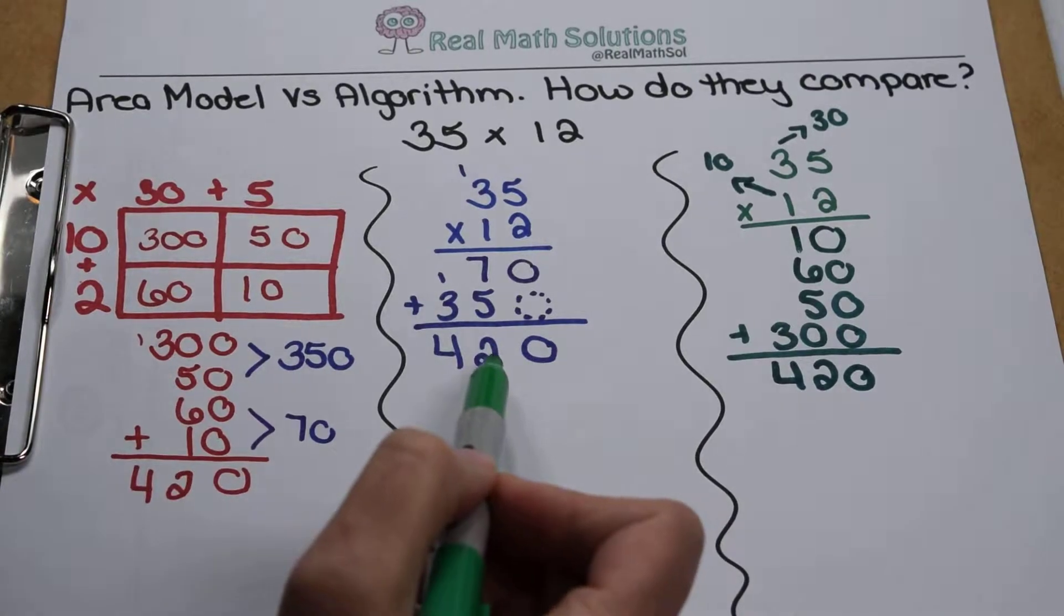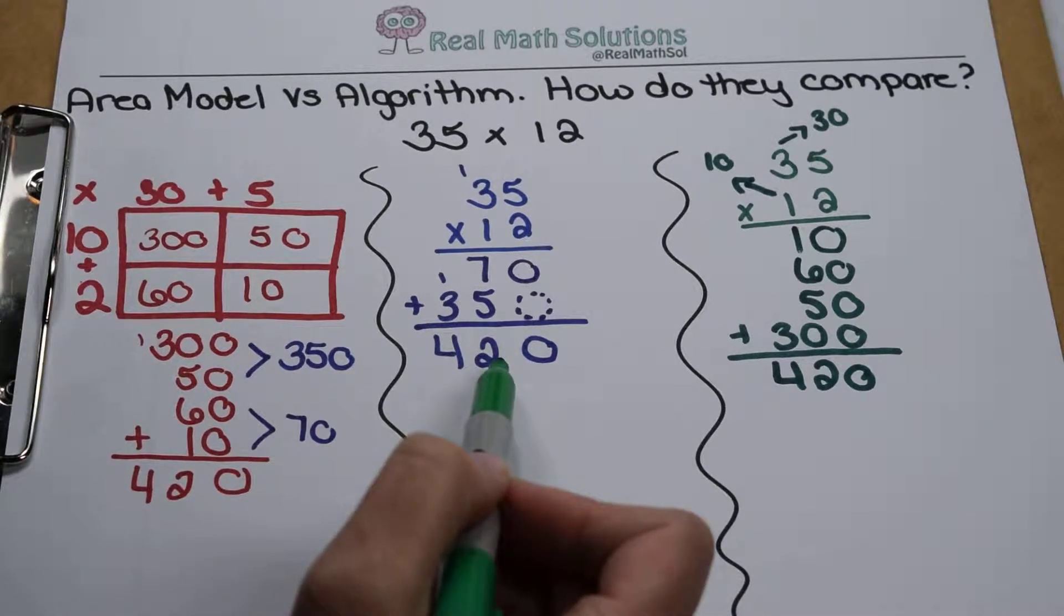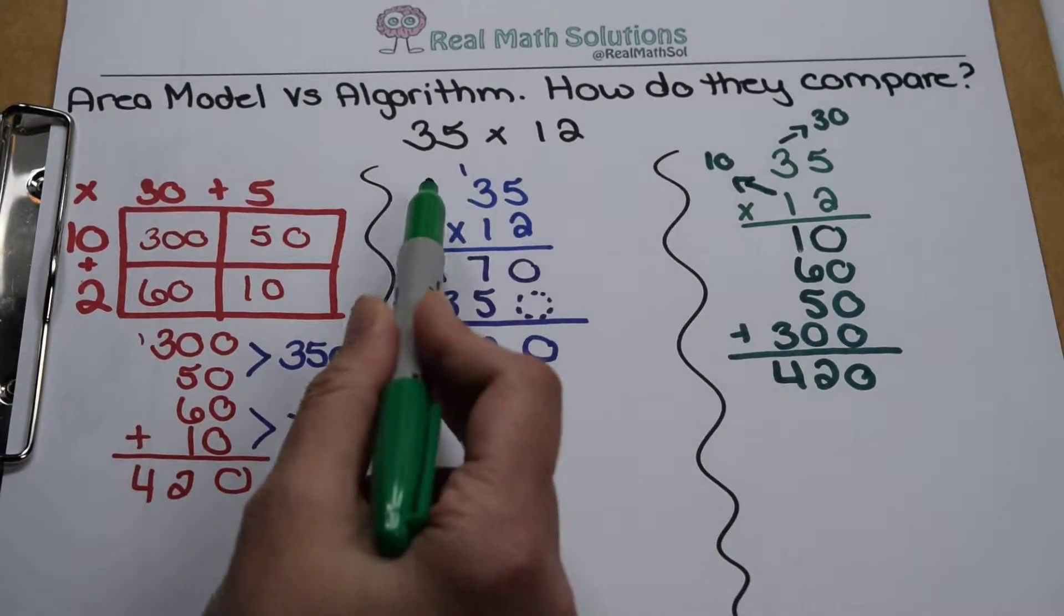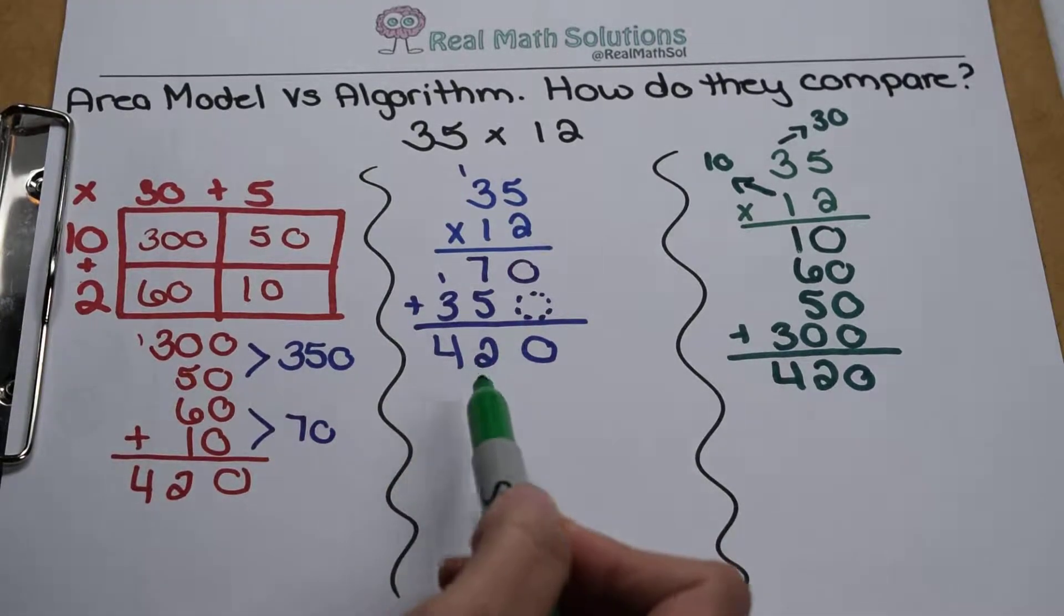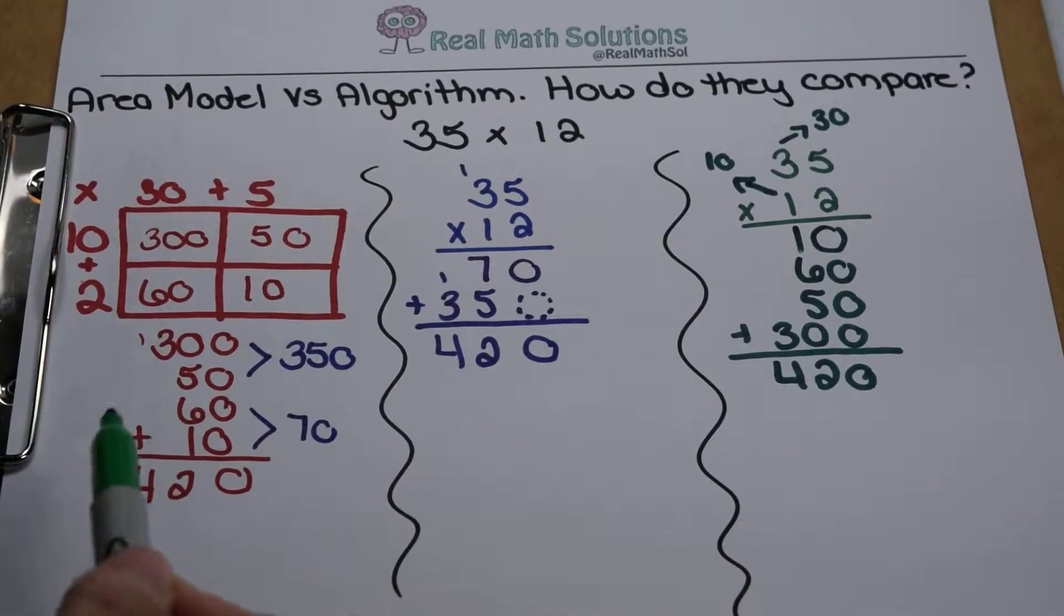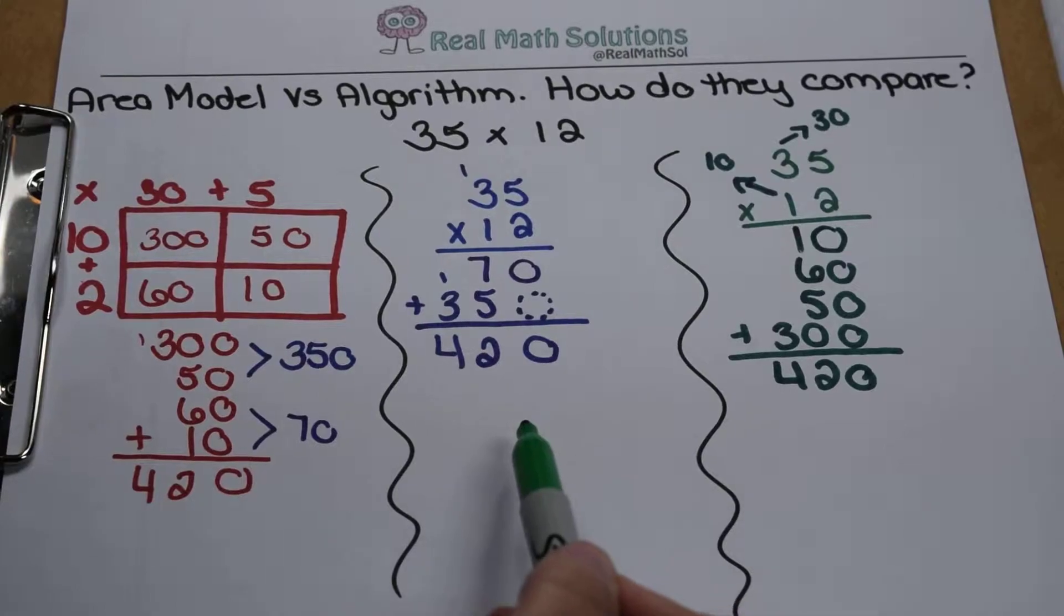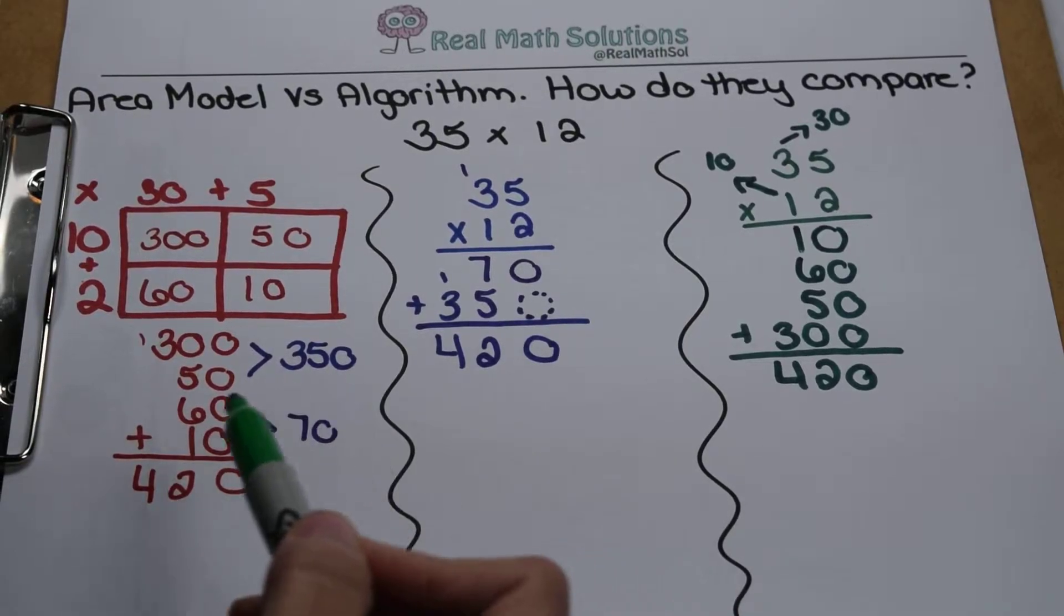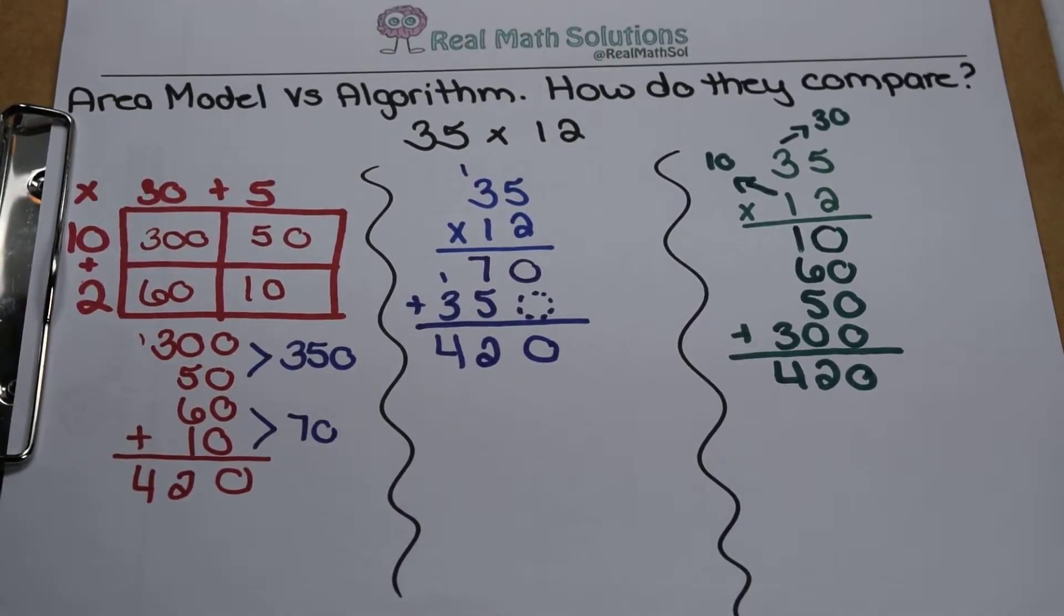When you use the traditional algorithm, what you're really doing is combining your place value and your addition steps into smaller groups. You're adding as you multiply so that at the end, you only have one small addition problem to do. But really, this area model and this algorithm are multiplying the exact same values, adding the exact same sums, and coming out with the exact same products.